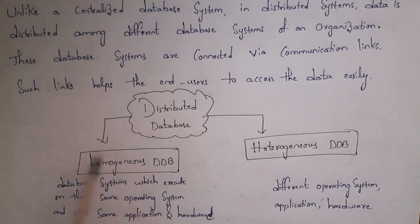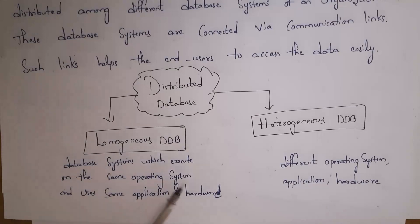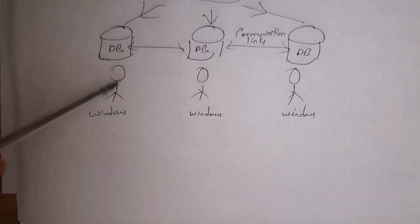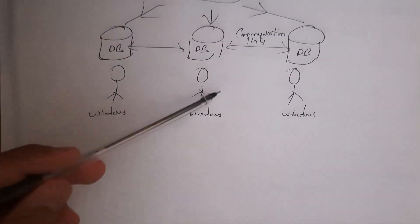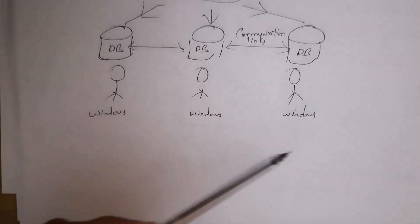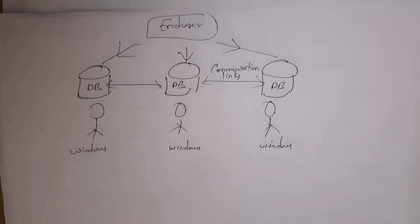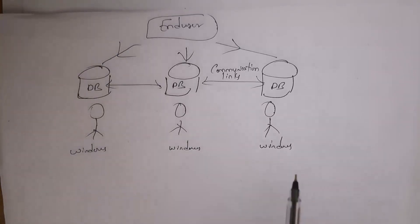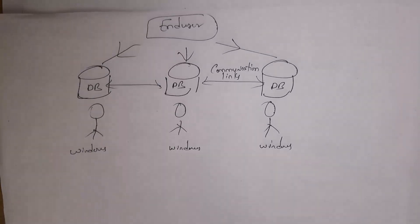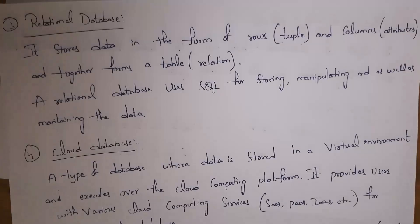Distributed databases are classified into two types: homogeneous distributed database and heterogeneous distributed database. Homogeneous distributed database means all database systems execute on the same operating system, and use the same application and hardware — for example, all users using Windows. Heterogeneous distributed database means all employees use different operating systems, different applications, and different hardware.